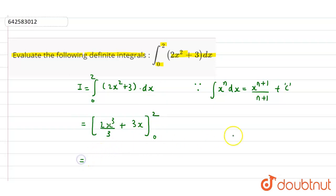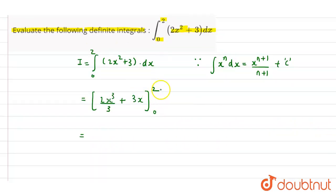So apply the limits. We can apply the limits by upper limit minus lower limit. So first put the value of 2 in the equation. It will be 2 by 3 into 2 cube plus 3 into 2 minus. Now put the value of 0 in the equation, it will be 2 by 3 into 0 cube plus 3 into 0.